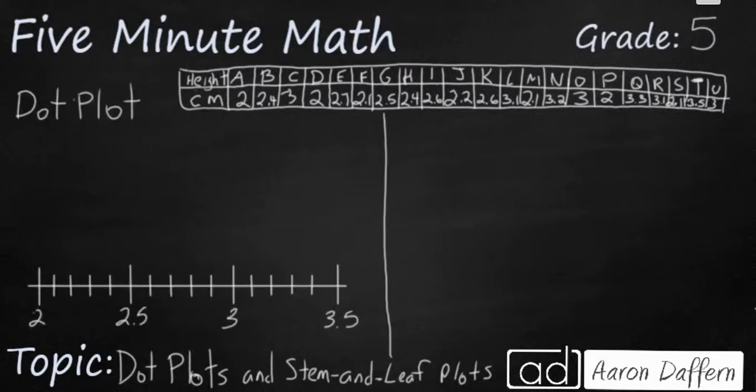A dot plot takes disorganized data and puts it on a number line so that you can bunch it together and look for patterns and trends. In this case our number line runs from 2 to 3.5 because those are the highest and the lowest values we see in our data table.